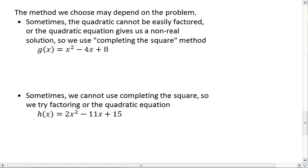So that's when we use a completing the square method. For example, if we have g of x equals x squared minus 4x plus 8, if you work this out with the quadratic, you'll end up with x equals 2 plus or minus the square root of negative 16, which is a non-real solution, in which case we would use completing the square.